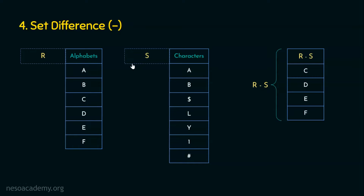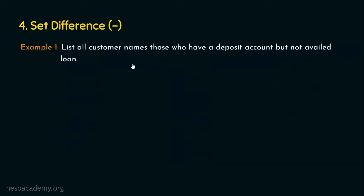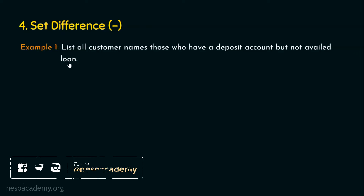With this basic knowledge, let's see the formal example. Example number one: list all customer names who have a deposit account but not a loan. In the previous lecture on the union operation, we listed customer names who have a deposit account and also have a loan. Here we need to list customer names who have a deposit account but have not availed a loan. We are considering the same depositor and borrower relations we have seen in the previous lecture.